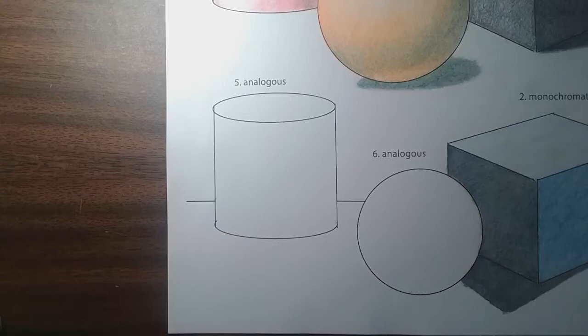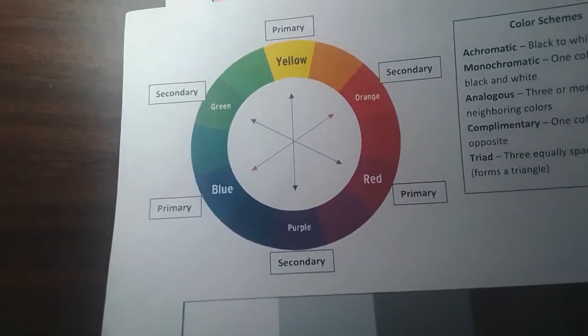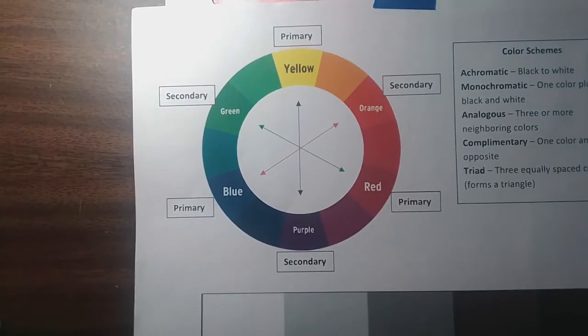Now we've reached the end of our worksheet where we're going to work on our analogous colors. Going back to our color wheel, analogous refers to three or more neighboring colors on our color wheel.